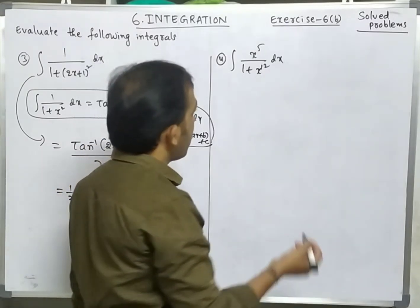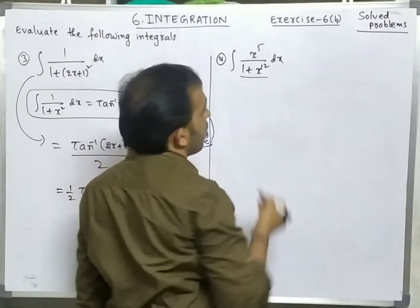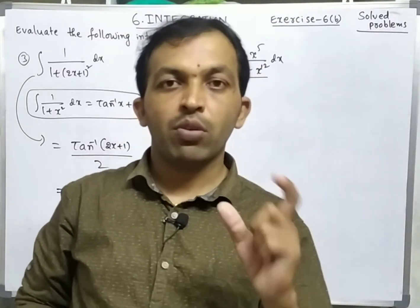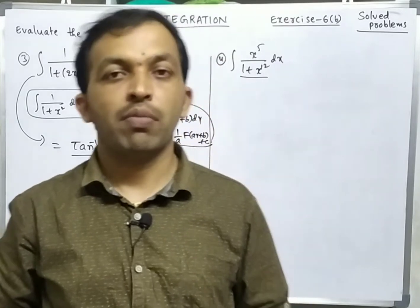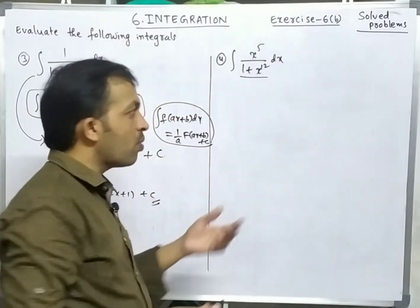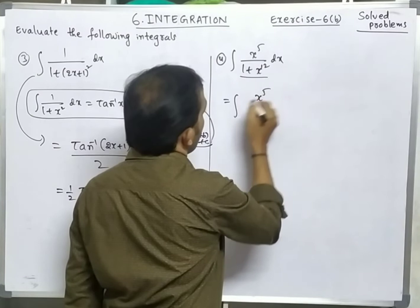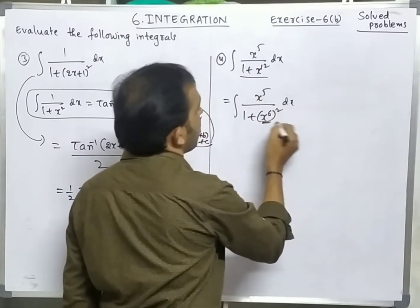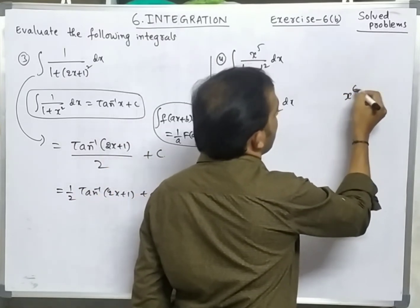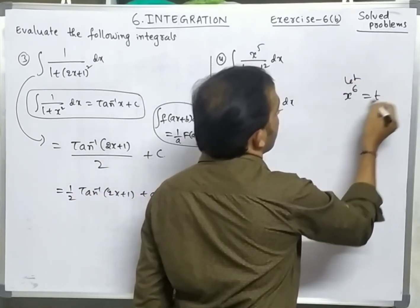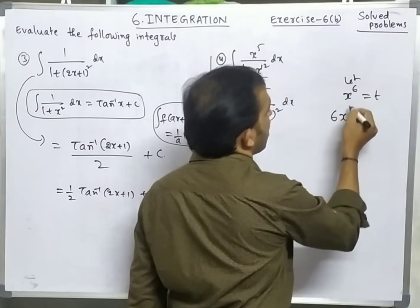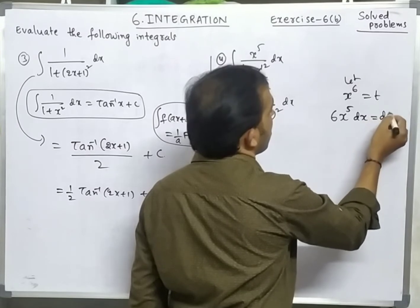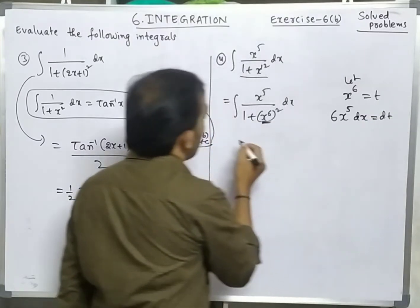This type of problem we did before. In the denominator we have 1 + x¹². Write x¹² in square form: that is (x⁶)². Now assume x⁶ = t. The derivative of x⁶ is 6x⁵ dx = dt, so x⁵ dx = dt/6.